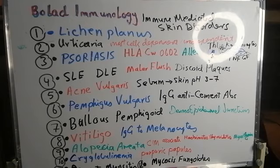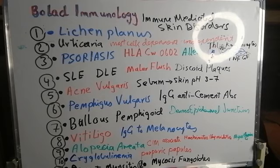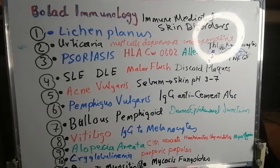Another example of an immune-mediated skin disorder is dermatomyositis, which usually affects the elderly. The patient presents with dermal lesions together with bilateral symmetrical proximal myositis. The pigmentation in dermatomyositis is pink or lilac in color and is due to immune complex deposition.